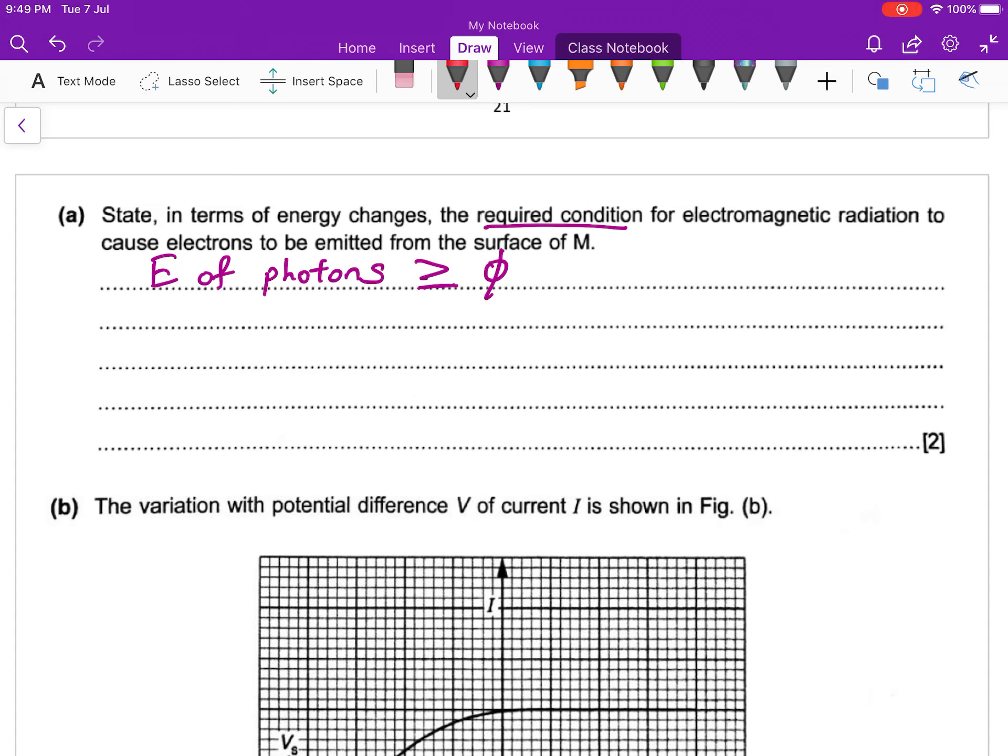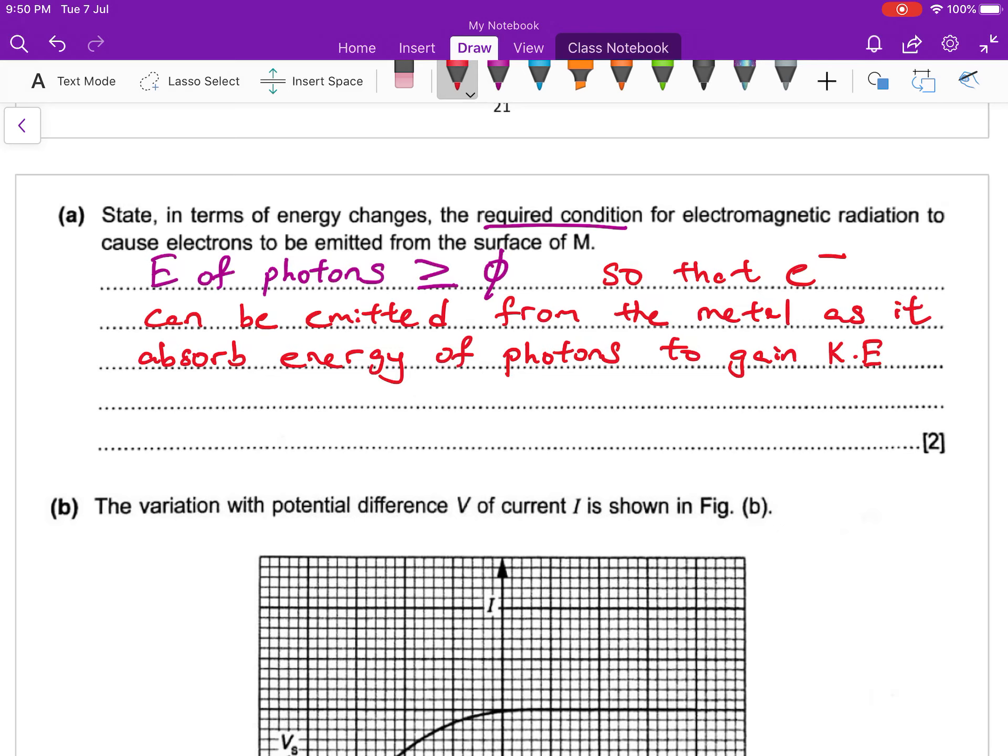So the energy of photons must be more or equal to work function. This is the required condition.